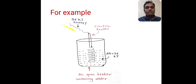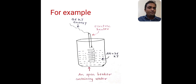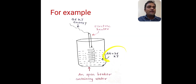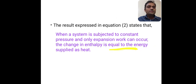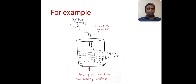We have supplied heat in the form of 36 kJ. So the change in enthalpy of water is 36 kJ. When a system — here the open beaker — is subjected to constant pressure, and only expansion work can occur, the change in enthalpy delta H of that water is equal to the energy supplied as heat, which is 36 kJ. So enthalpy is the heat change at constant pressure.